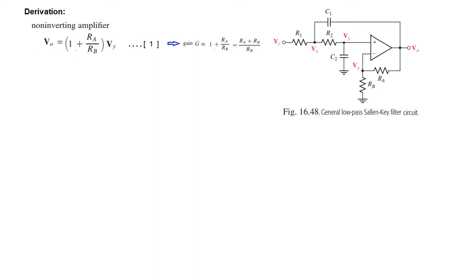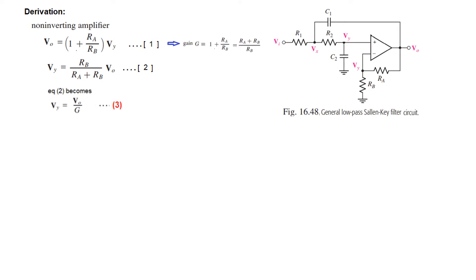The gain can also be written as (RA + RB)/RB. From here we will find out VY. VY is found by dividing V_out by G, giving equation number 2. We can further simplify by replacing RB/(RA+RB) with 1/G, so VY = V0/G. This is one of the important relations we will be using.